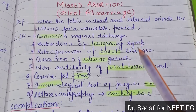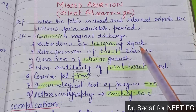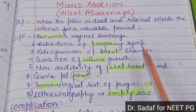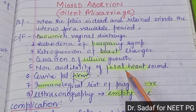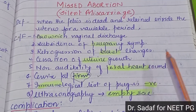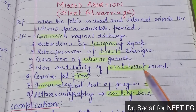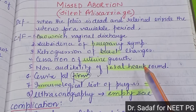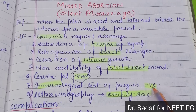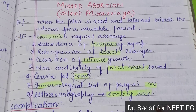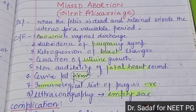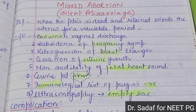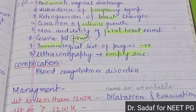The uterine growth increases in normal pregnancy, but when the fetus is dead, the uterine growth will cease. The fetal heart sound is not audible. The cervix is firm. The immunological pregnancy test will be negative. On ultrasonography, it will show an empty or non-viable finding. This is an important diagnostic sign. Complication of missed abortion includes blood coagulation disorder.